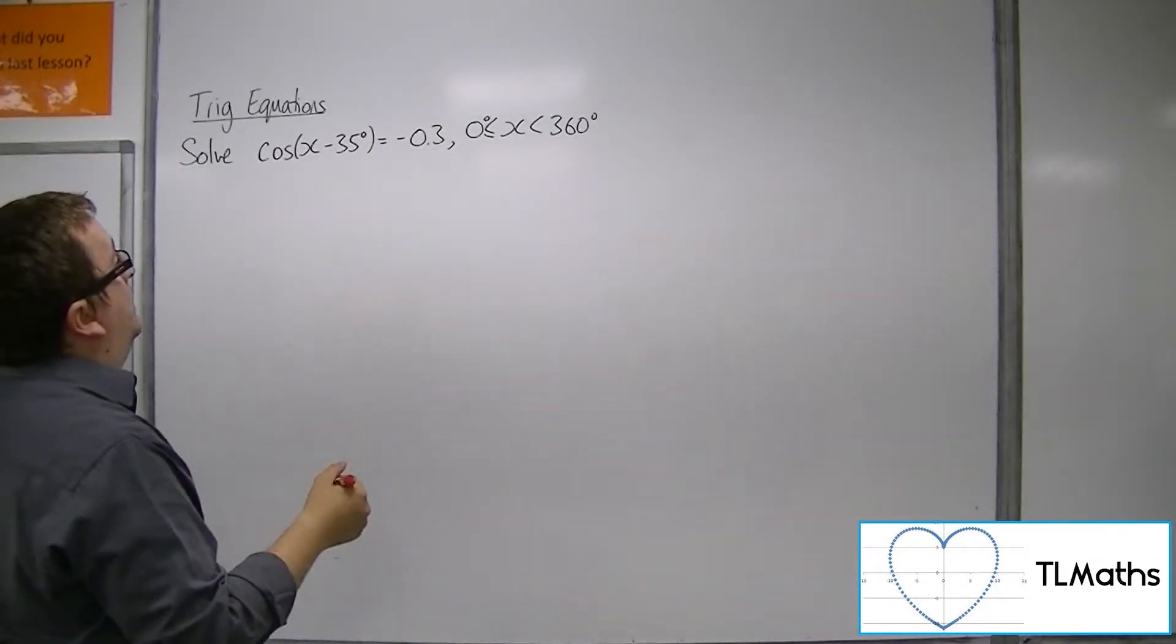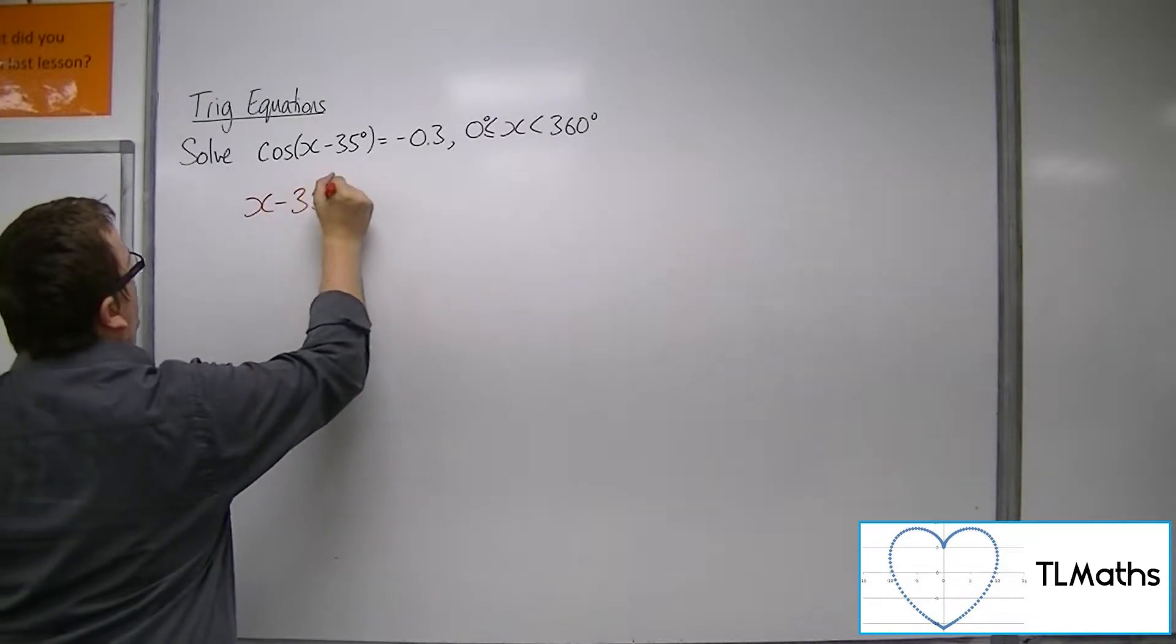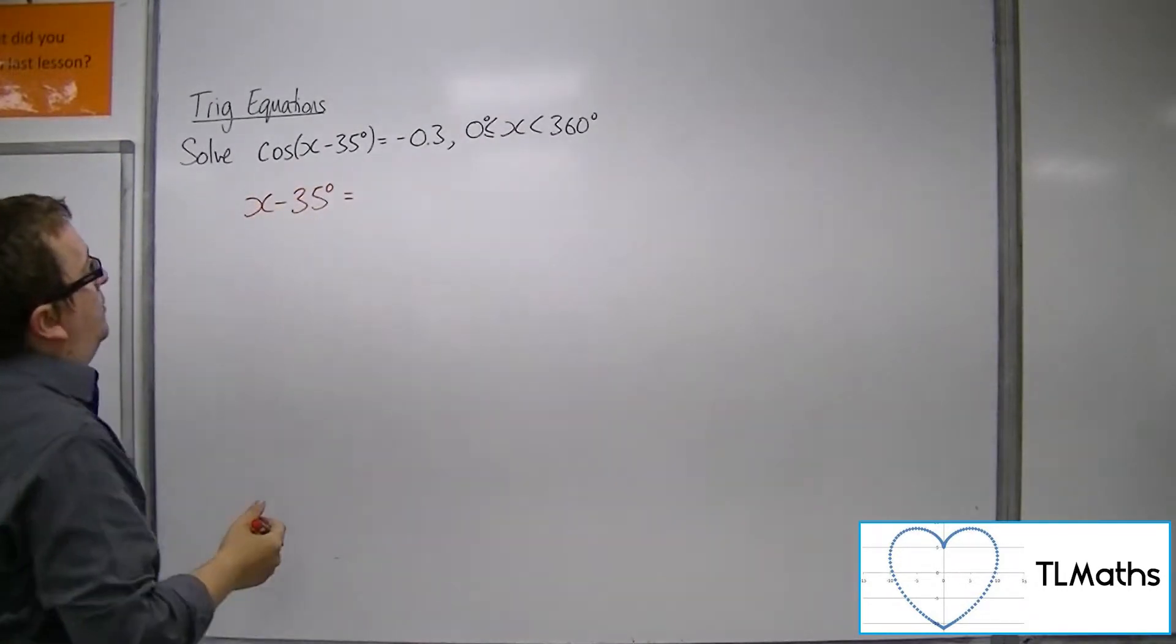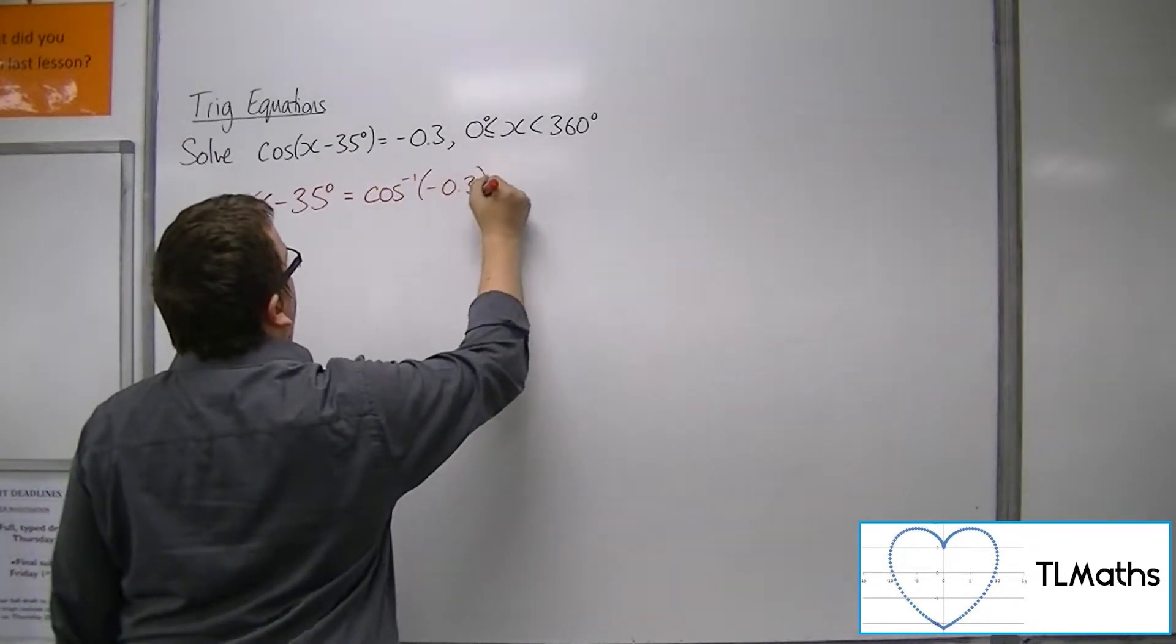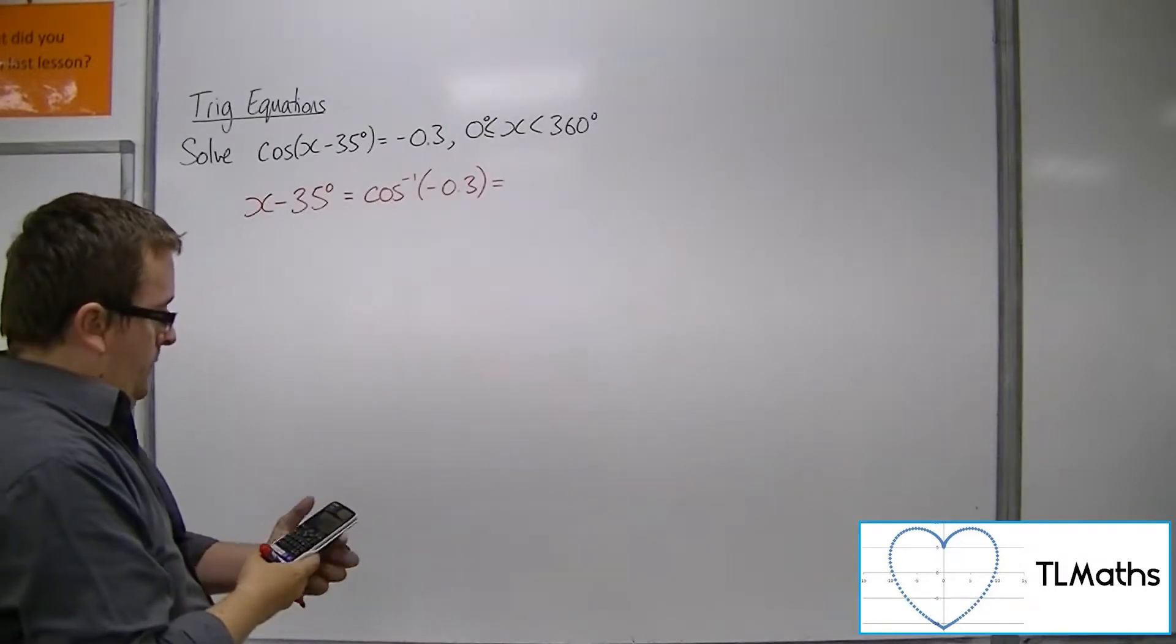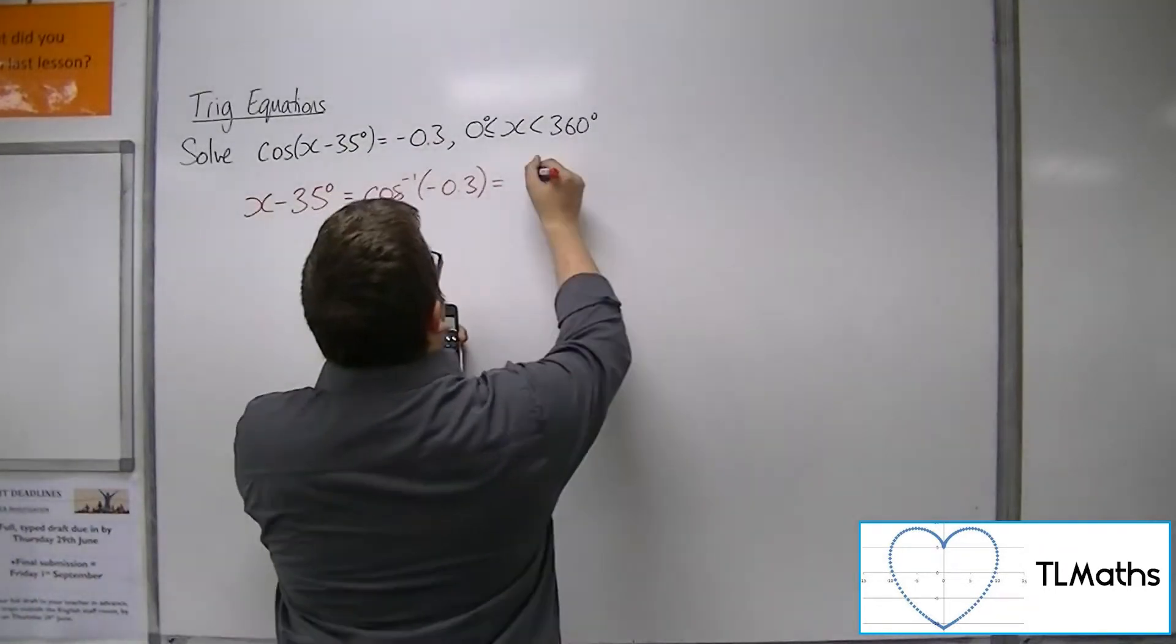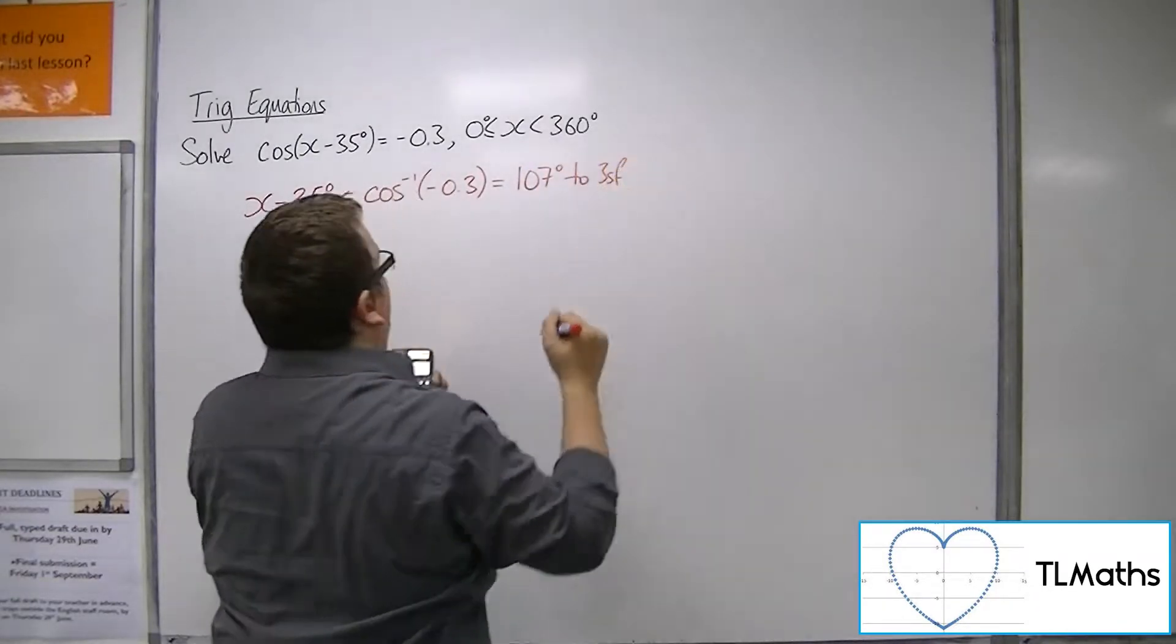So first step is to inverse cosine both sides. So it maintains the x minus 35, and we've got the inverse cosine of minus 0.3, which is 107 degrees to 3 significant figures.